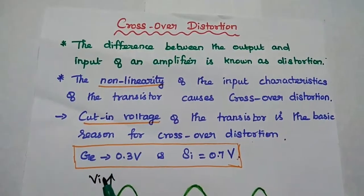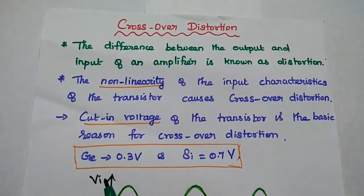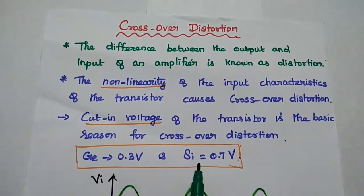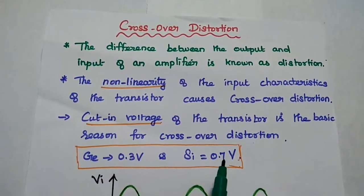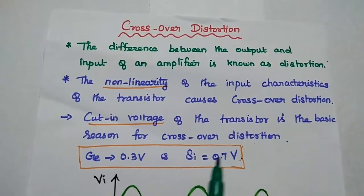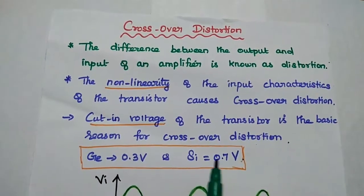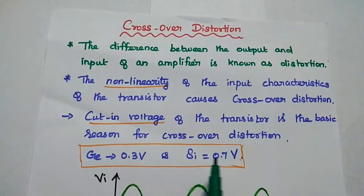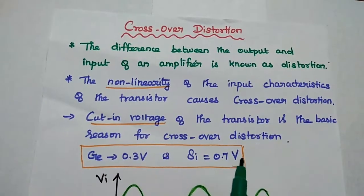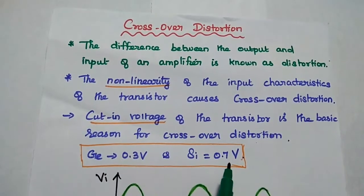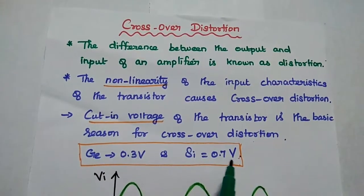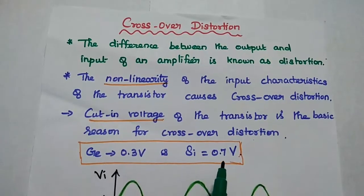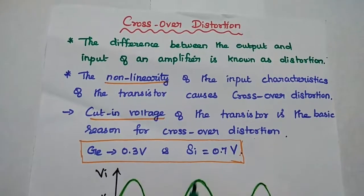For a germanium transistor, the cut-in voltage is 0.3 volts. For silicon, its value is 0.7 volts. So whenever the input voltage is greater than 0.7 volts, then only the transistor starts conducting for a silicon transistor.